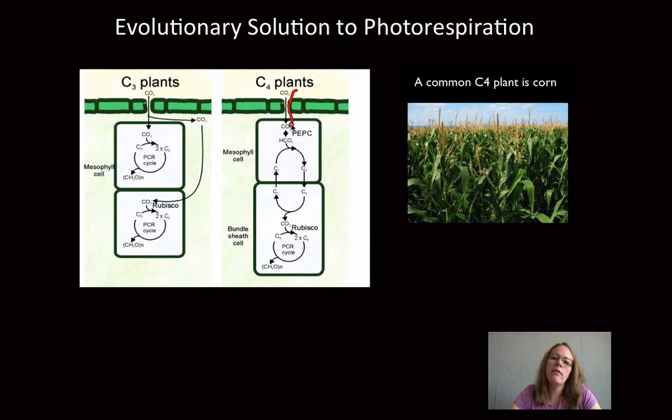So carbon dioxide can come in, and rather than just immediately go into the Calvin cycle, the carbon dioxide can be rearranged into a compound, PEP, and it's a four-carbon molecule that then the plant can store. So when that's stored, it can then move into the bundle sheath cells. That is a big difference between C3 and C4 plants.